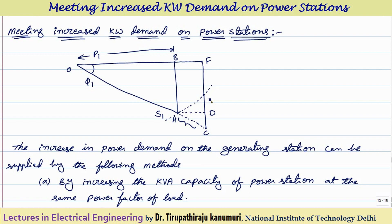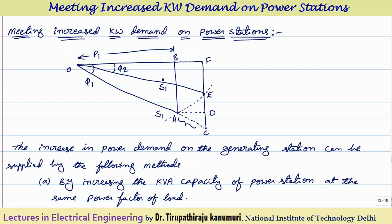Your circle will intersect at this point. That means with the same S, you have to improve the power factor up to a certain level. Using this approach, if the power factor is improved to phi 2, this point is represented by E, and OE is equal to S1 — the same KVA. We can maintain the same KVA by installing power factor correction equipment and still supply the required load. For a given KVA rating, the power plant can supply more power if the power factor is improved.